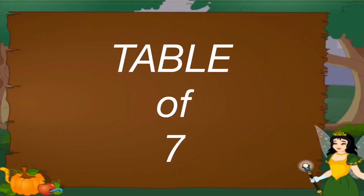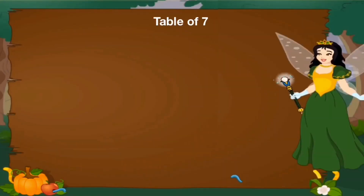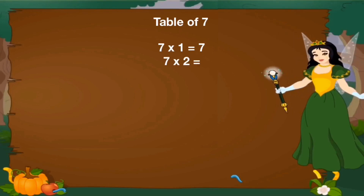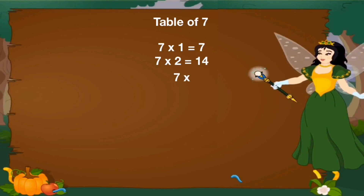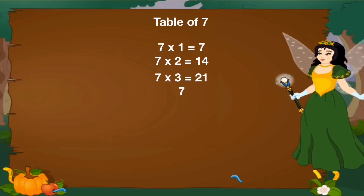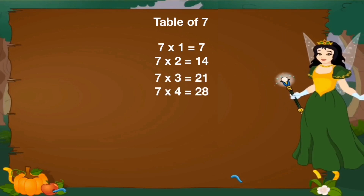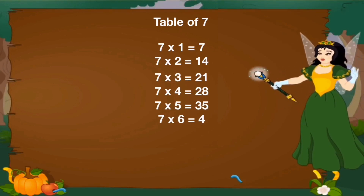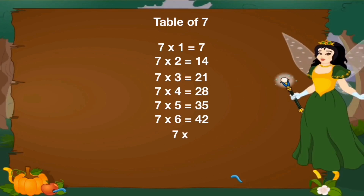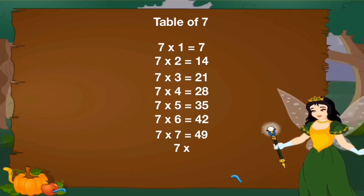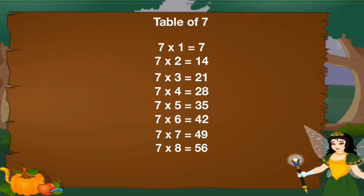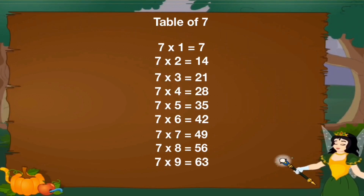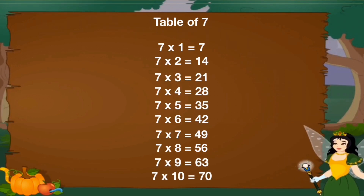Let's revise table of 7. 7 1's are 7, 7 2's are 14, 7 3's are 21, 7 4's are 28, 7 5's are 35, 7 6's are 42, 7 7's are 49, 7 8's are 56, 7 9's are 63, 7 10's are 70.